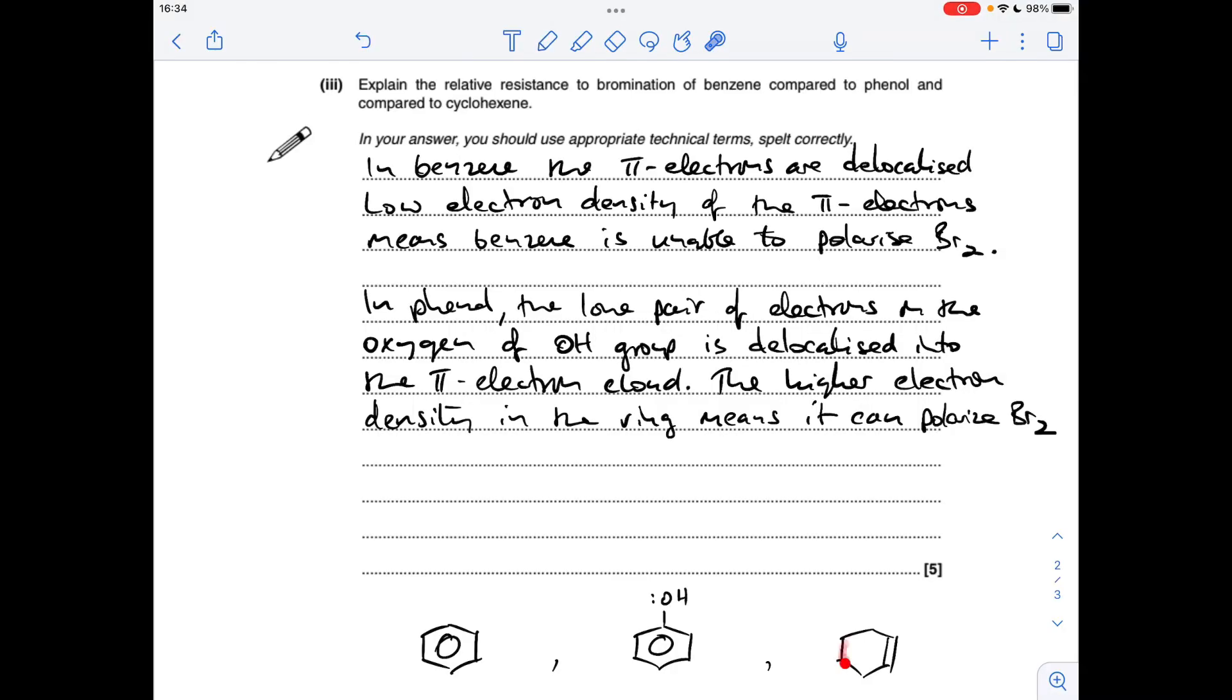And finally, in cyclohexene, you've actually got localised pi-electrons in the carbon-carbon double bond. So the pi-electrons are just shared between those two carbon atoms, and so this will be classed as a region of high electron density, and it will be able, therefore, to polarise the bromine molecule.